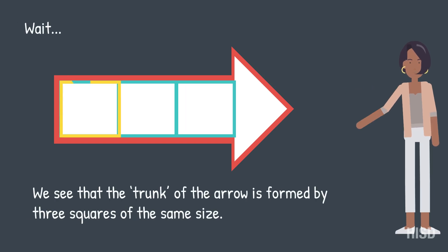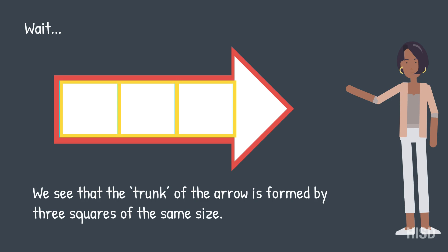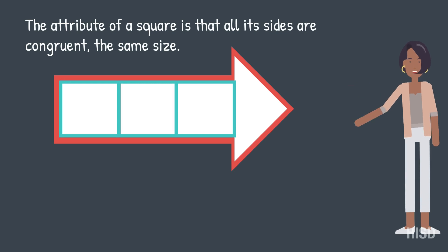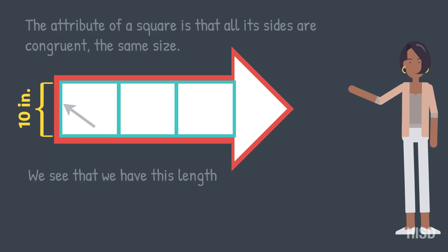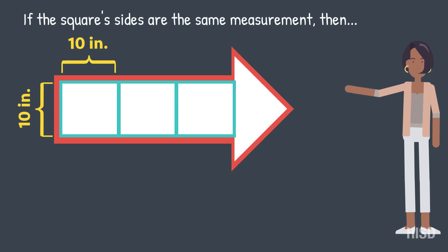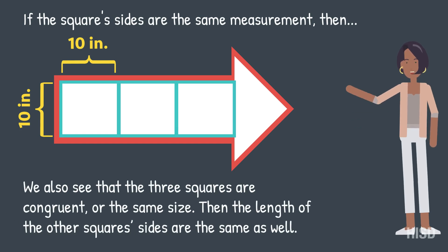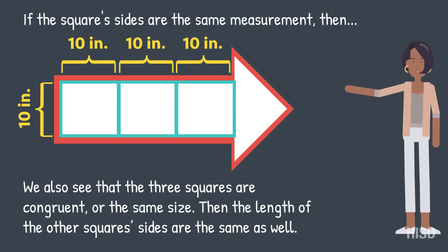We see that the trunk of the arrow is formed by three squares of the same size. The attribute of a square is that all its sides are congruent — the same size. We see that we have this length. If the square sides are the same measurement, then we also see that the three squares are congruent, or the same size. Then the length of the other square sides are the same as well.